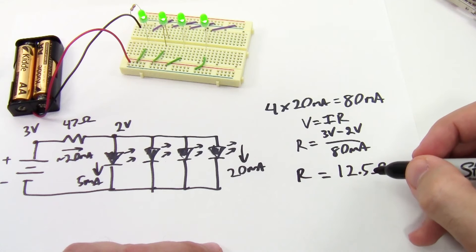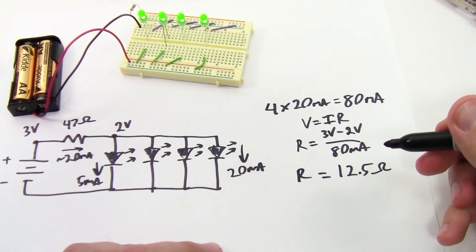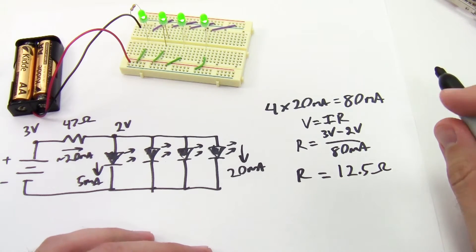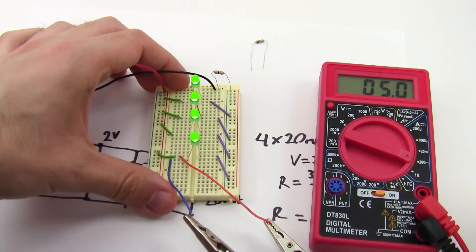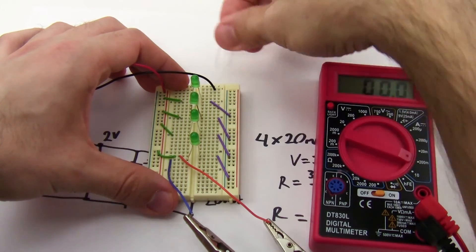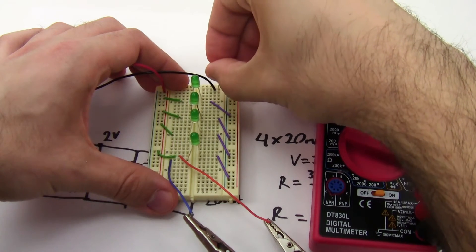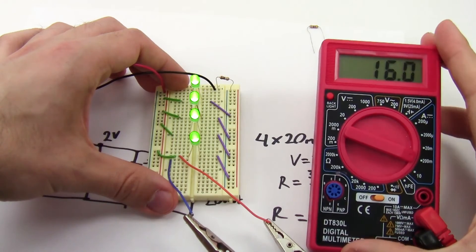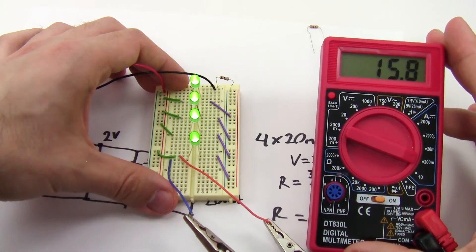Again, I don't have a 12.5 ohm resistor. I have a 10 ohm resistor, so I'll call that close enough. If I swap the 10 ohm resistor in for my 47 ohm resistor, I should see the LEDs get brighter, and my current will go up. In this case, from about 5 milliamps up to 16 milliamps.